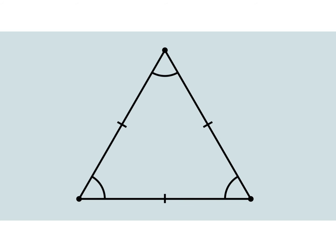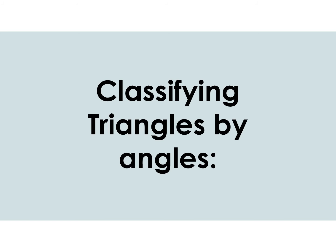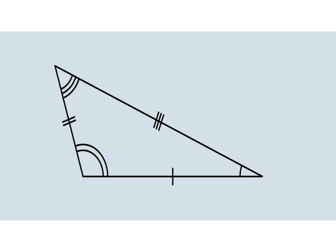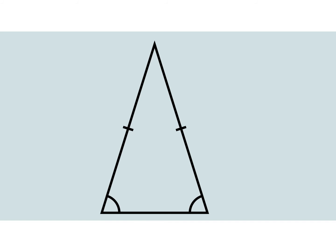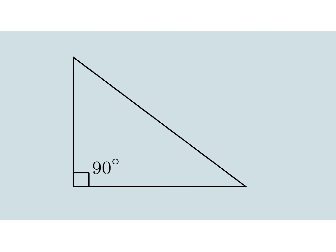Now we're going to classify some triangles by their angles. How would we classify this triangle with three angles that are not equivalent or congruent? How would we classify this triangle that has three equal angles? How would we classify this triangle that has two equal angles? How would we classify this triangle that has one angle that measures 90 degrees?